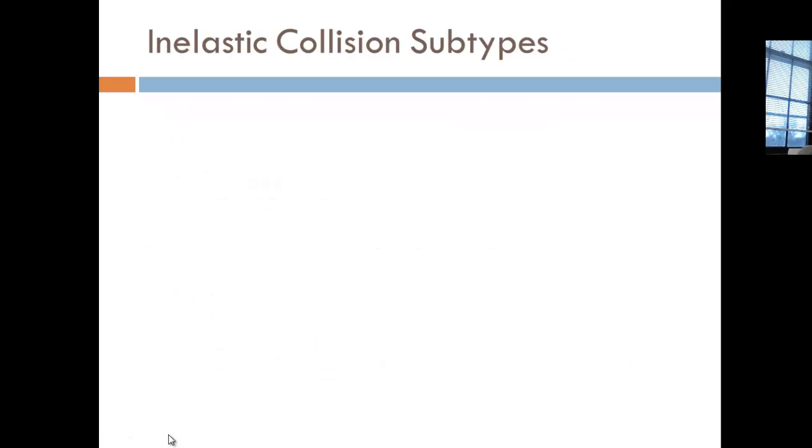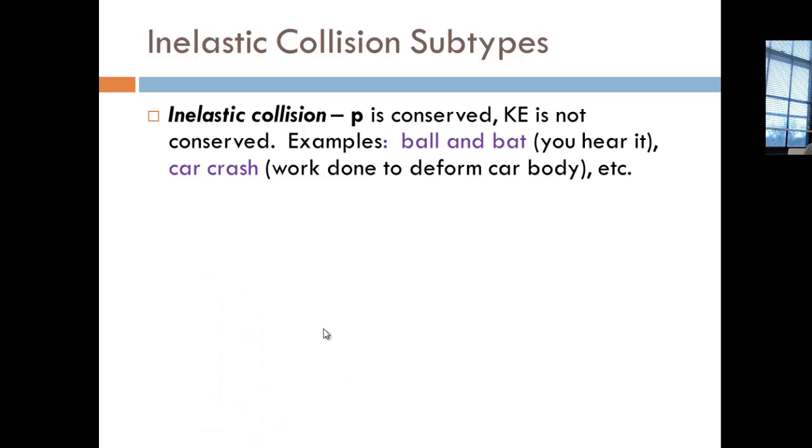There's also two subtypes for inelastic collisions. So let's take a look at those and what distinguishes those. Just basically an inelastic collision: momentum is conserved, kinetic energy is not conserved. So what are some examples of this?